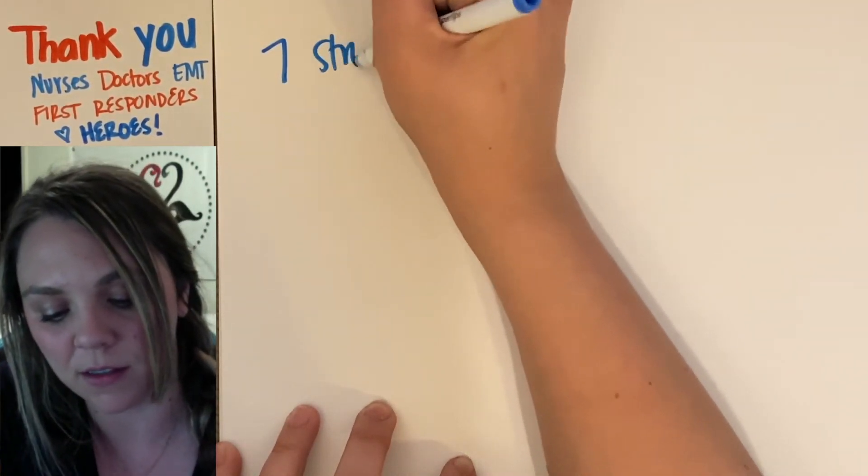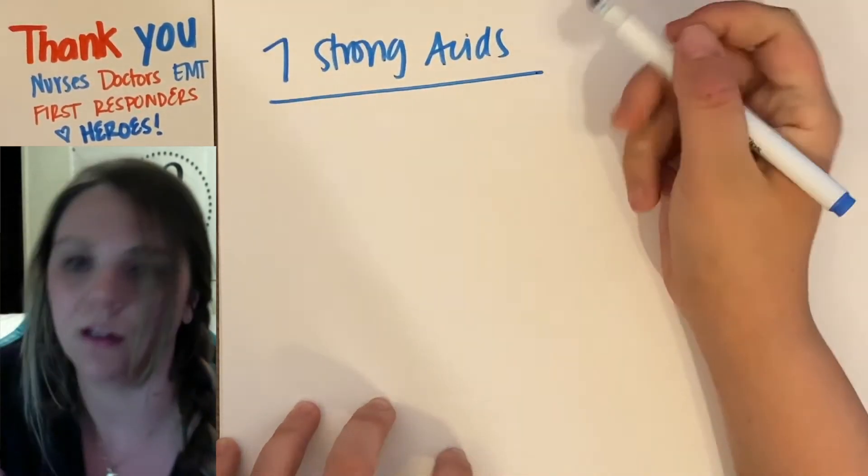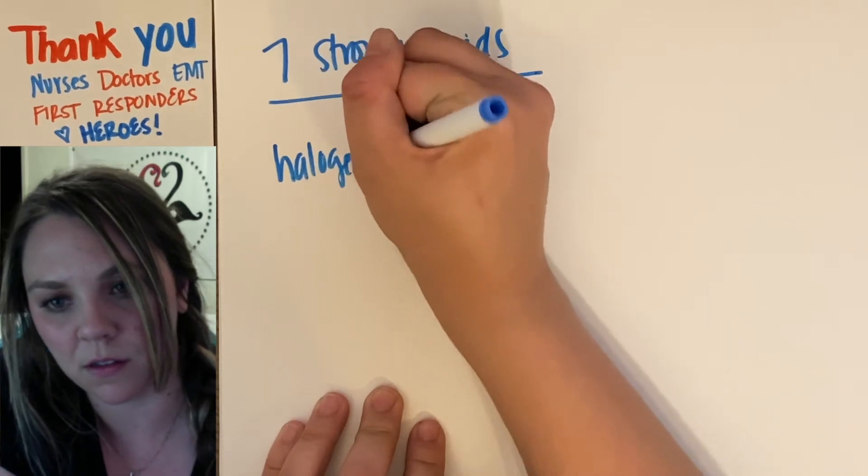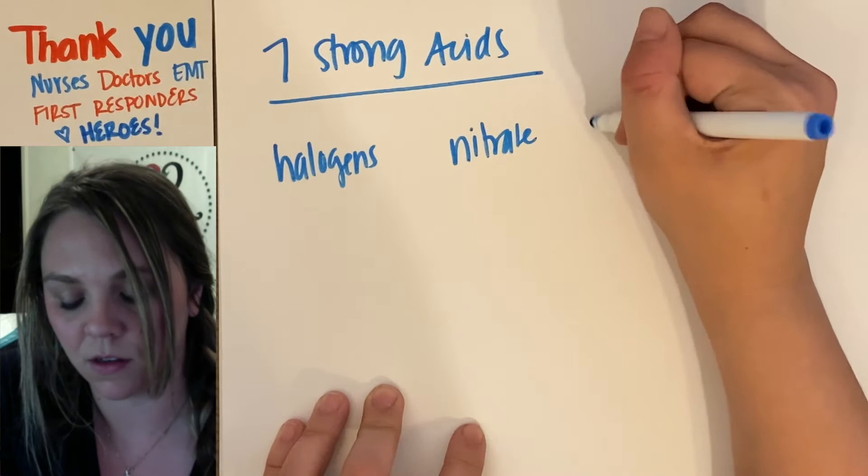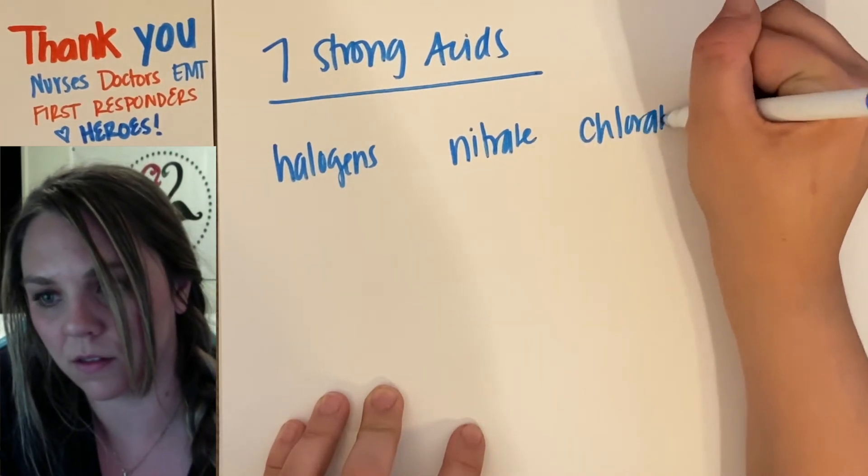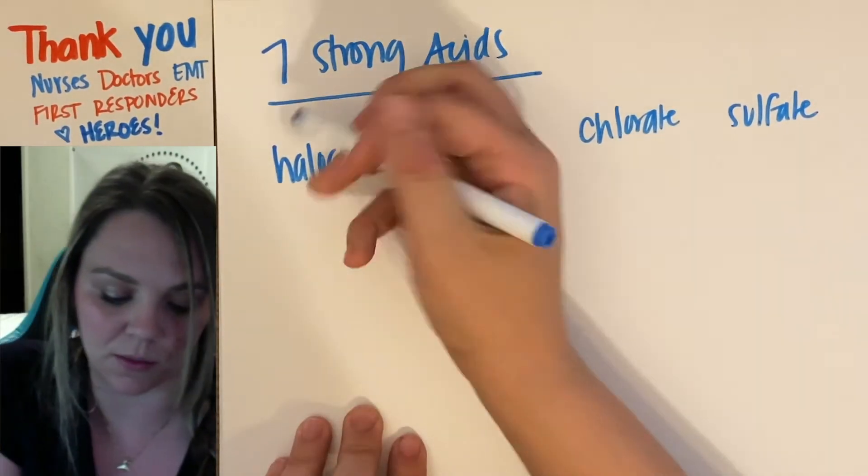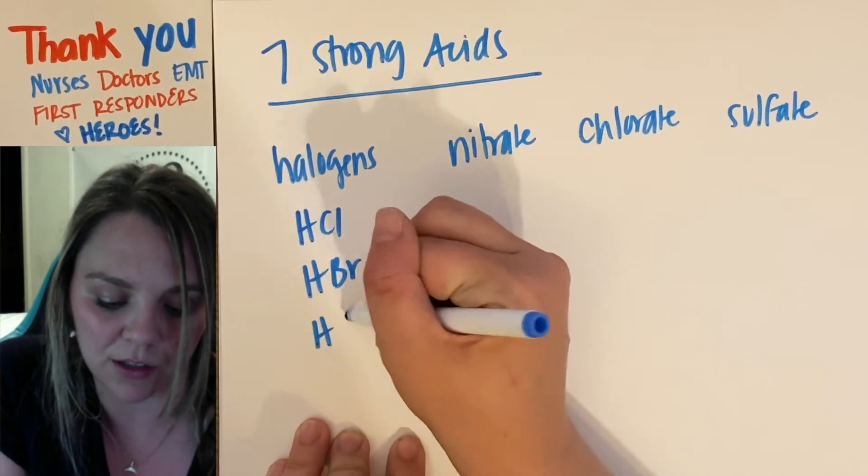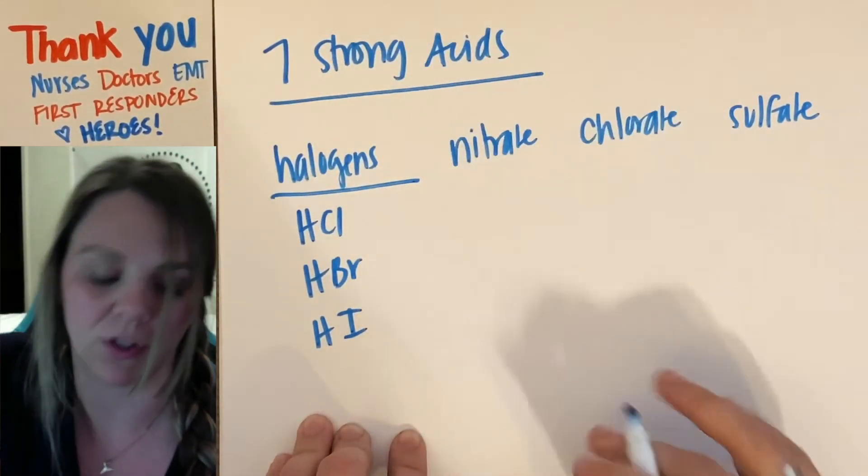And then the other thing to help you, there are seven strong acids. You have your halogens, nitrate, chlorates, and sulfates. So your halogens are going to be HCl, HBr, HI for your halogens.